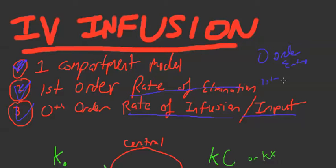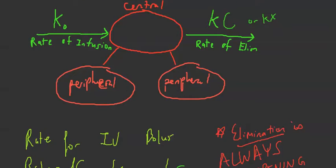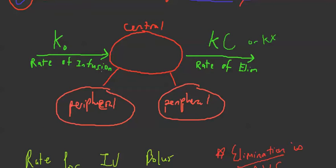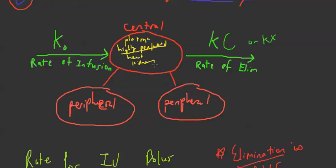So we have zero-order entry and first-order exit. Now let's look at the compartment in the body. In a normal situation, we have the central compartment, which is whatever the drug goes into first — so plasma is in the central compartment. Also in the central compartment are highly perfused tissues, because they receive the drug right away. These include the heart, kidney, and liver — drug gets distributed there right away.